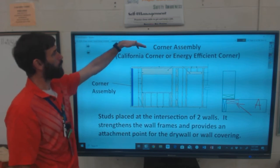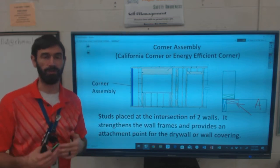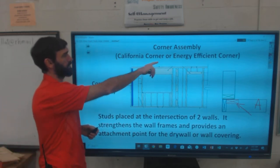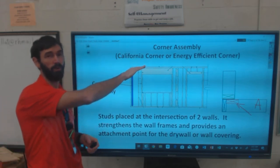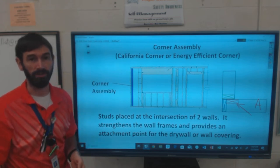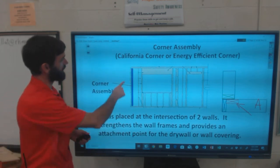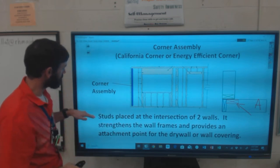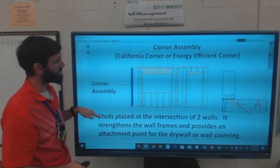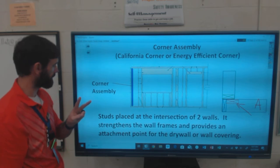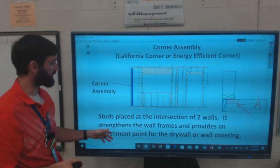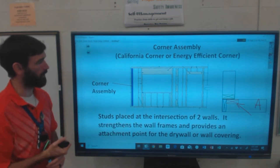Corner assembly - there's several different ways to build a corner assembly. I'm going to focus on the California corner, or what the book calls an energy-efficient corner. It's highlighted in blue here. Studs placed at the intersection of two walls. It strengthens the wall frame and provides an attachment point for drywall or wall cover.